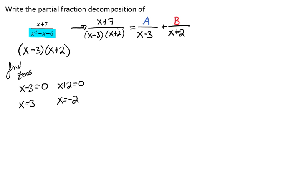Then we're going to multiply to get a common denominator. So we're going to multiply our a by x plus 2, and its denominator by x plus 2,